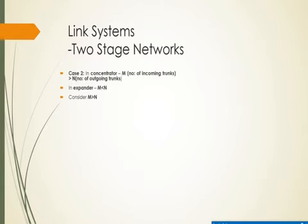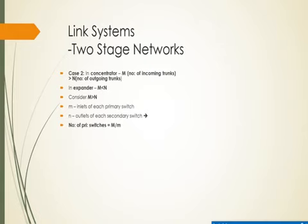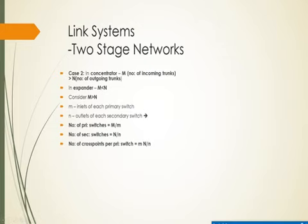For the concentrator where m is greater than n: let m be the number of inlets for each primary switch, and n be the number of outlets for each secondary switch. The number of primary switches required is given by capital M divided by m (total incoming trunks divided by inlets per primary switch). The number of secondary switches is given by capital N divided by n (total outgoing trunks divided by outlets per secondary switch).